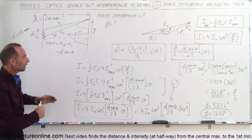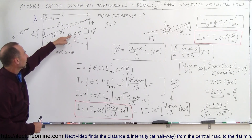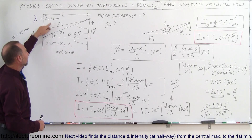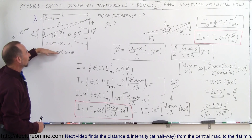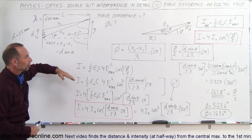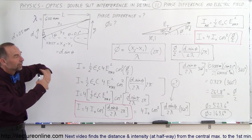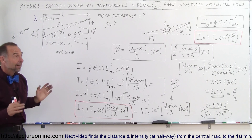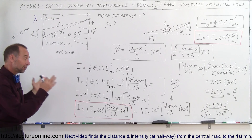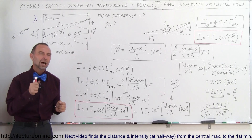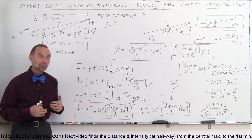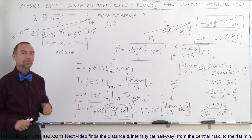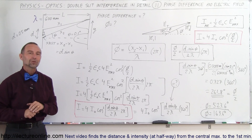This gives you a feel for the process: if you know the angle, the slit distance, and the wavelength, you can calculate the phase difference. From the phase difference, you can calculate the intensity at that particular location. Now that we've got all this under control, we're ready to go ahead and do some real examples applying all this information.